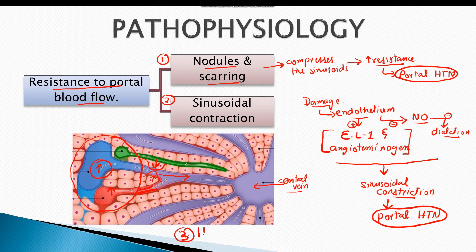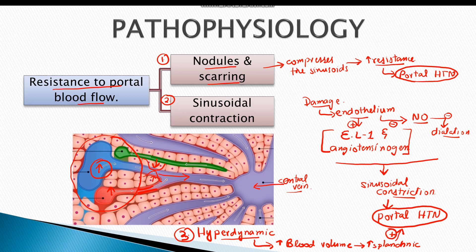In addition to resistance within the sinusoids, hyperdynamic circulation in chronic liver disease increases blood volume in systemic blood vessels. Hyperdynamic circulation means abnormally increased circulatory volume due to systemic vasodilation. Since there is vasodilation in chronic liver disease and cirrhosis, there is increased pooling of blood in systemic blood vessels, and increased blood return from splanchnic vessels adds to portal hypertension.